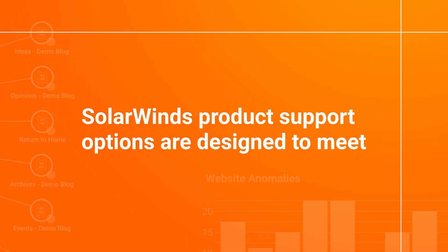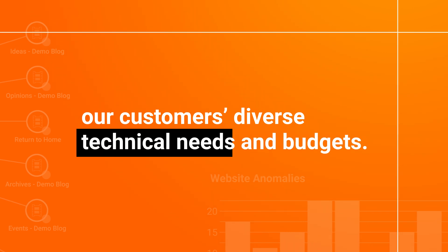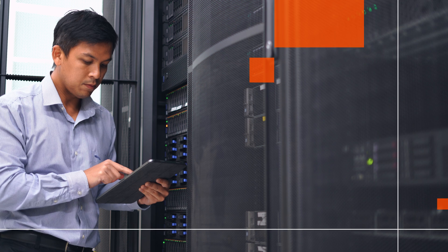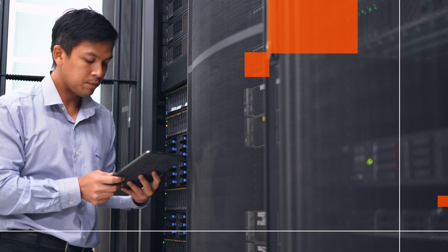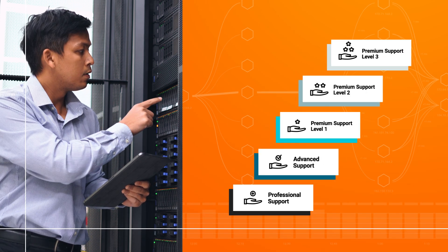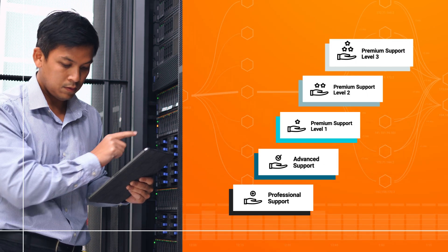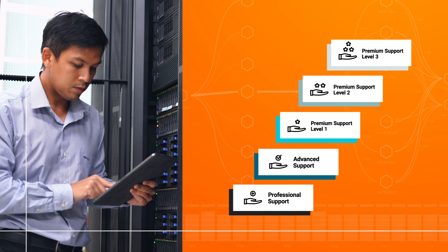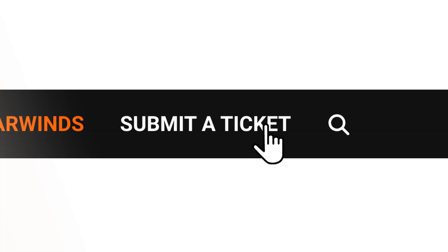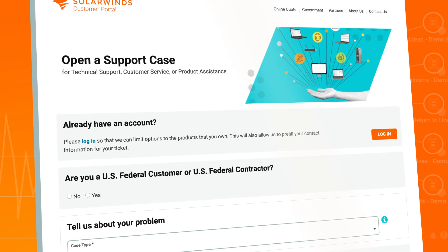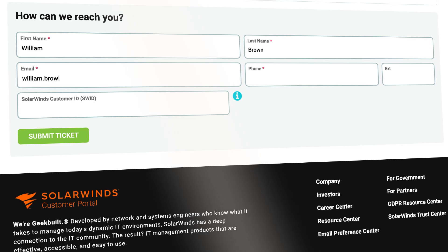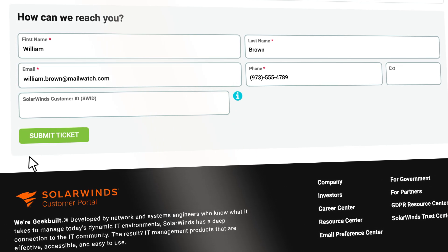SolarWinds product support options are designed to meet our customers' diverse technical needs and budgets. We created support tiers to give you the power and flexibility to focus on what you need for success. Professional support is included with your purchase, but customers can also select an option from our offerings to best fit their environment and organization. This aligns our team with the business and technical outcomes most critical to you. Our in-house experts are ready to help you seven days a week, 365 days a year.